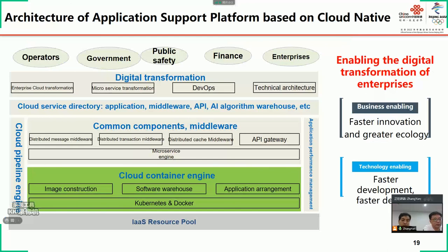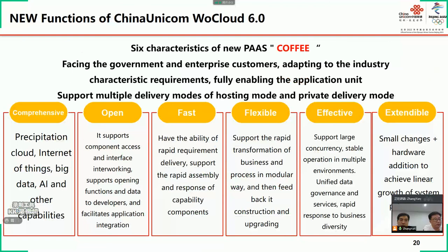In the process of cloud-native transformation of telecom cloud, we should not just consider containerization of network elements, but also consider the change in the overall company information architecture. The application support platform based on cloud-native becomes particularly important. The platform needs to support all telecom cloud resource deployments and application management, and also needs to consider microservices, DevOps, and middleware. China Unicom always actively participates in open source communities. WorkCloud is the infrastructure resource system independently developed by China Unicom, based on OpenStack, and since its launch it has been widely adopted in our own data centers and customers in many industries.